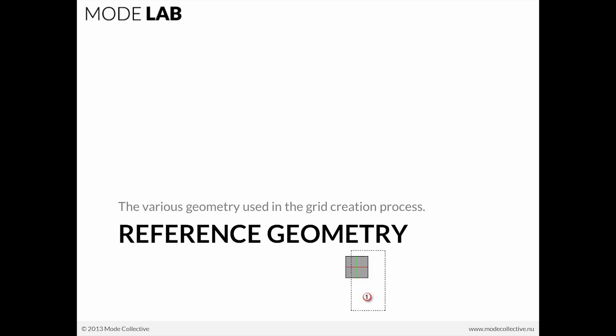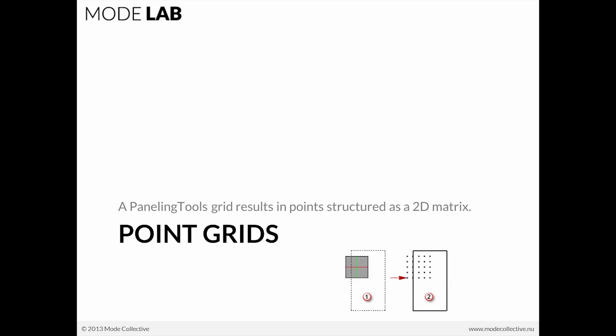Reference geometry is the various geometry used during the grid creation process — it might be a point, a curve, a surface, et cetera. Point grids are the Paneling Tools grid, which is created and results in points structured as a 2D matrix. The points are always going to be organized as a two-dimensional matrix so that you can then populate that matrix.